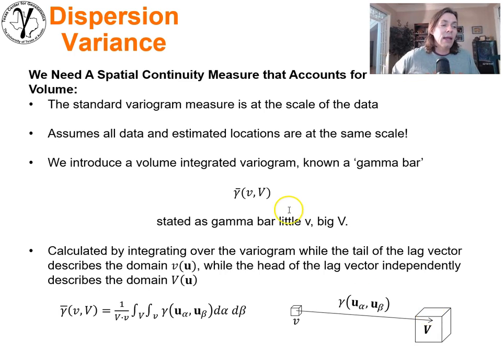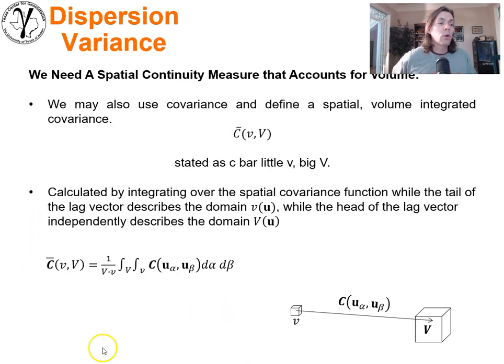That would be the gamma bar between little v and big V—if we scan the tail of the lag vector over little v and the head of the lag vector over big V. We could represent that as a double integral where we're in fact taking an integral over big V, integral over little v, and we are scanning all the possible tail to head locations over those two volumes.